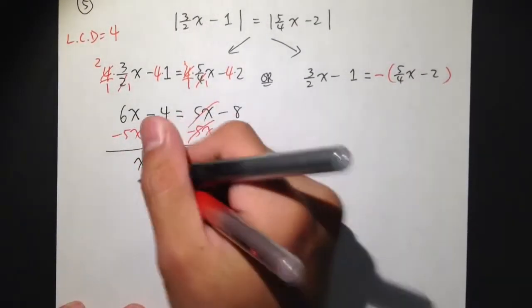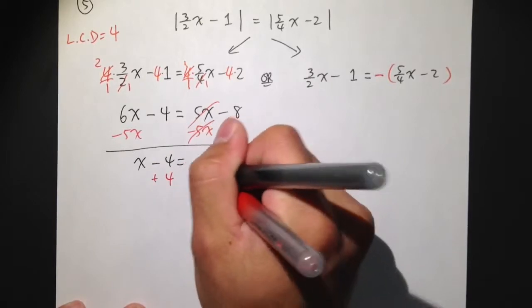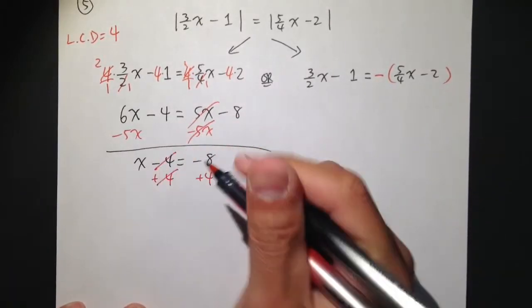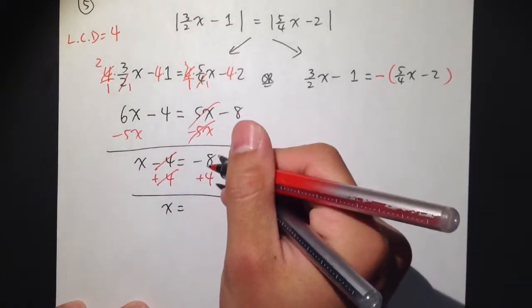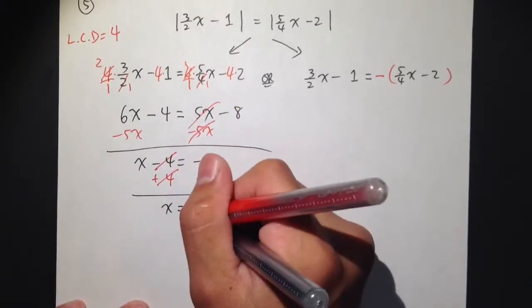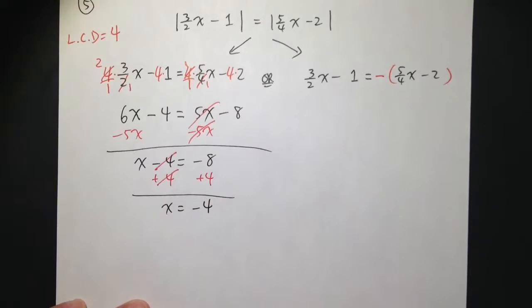x minus 4 is equal to negative 8. Let me add a 4 on both sides. I end up with x is equal to negative 8 plus 4, which is negative 4. One answer. This is one of my answers.